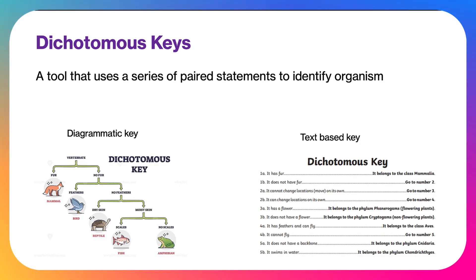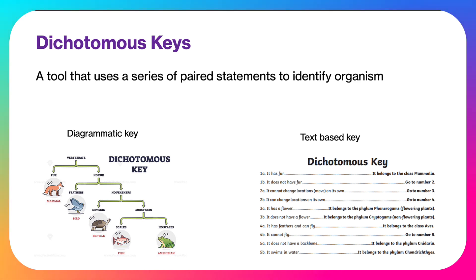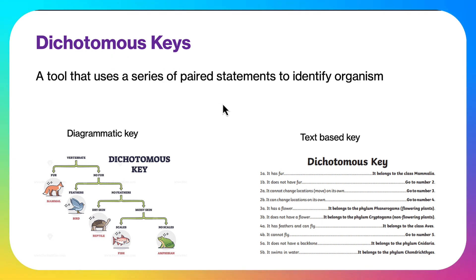So what is a dichotomous key? It's a tool that we can use to identify organisms. The word 'dichotomous' — 'di' meaning two, and 'tom' meaning to cut — so it's basically cutting into two. It's a series of paired statements that we can work through step by step to identify an organism.